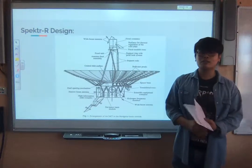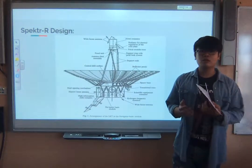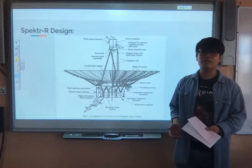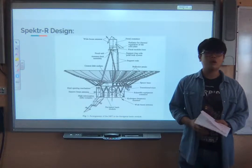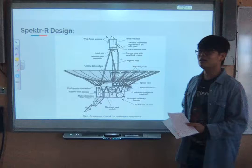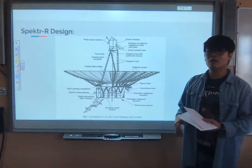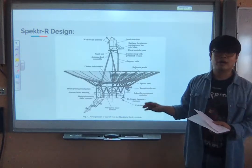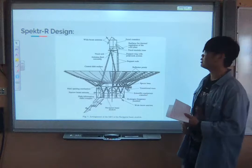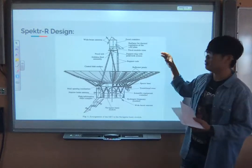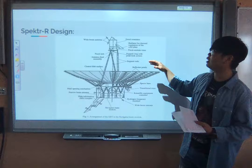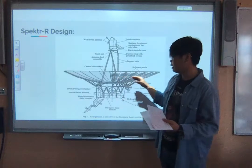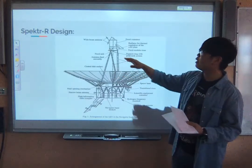Now I'm going to talk about the Spectra-R design. The Spectra-R was designed like other space observatories in the Spektr series, following the standard of the Navigator satellite platform, which was part of the module spacecraft. The Spectra-R consists of a large radio antenna, the flight system, and the power supply, which were run by the Navigator that allows the telescope to function in its orbit. The main components of the Spectra-R design include a focal container, the reflector petals, the central surface, and the wide beam antenna.